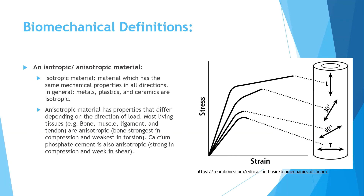The last concept is isotropic versus anisotropic material. Isotropic materials have the same properties in all directions — like metals and ceramics. Anisotropic materials, like bone, muscles, and ligaments, have properties that differ depending on the direction of the load. As shown in the picture, different directions of loading on bone produce different stress-strain curves, illustrating that the mechanical properties of bone are direction-dependent.